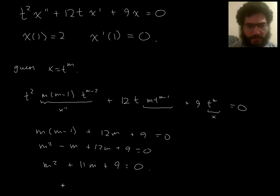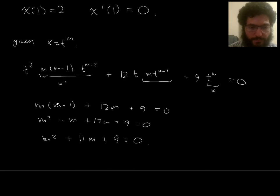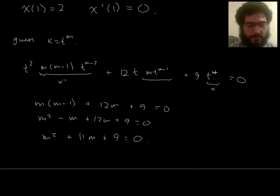So then, I guess, not seeing a nice way to factor it, so there's integer roots, so I'm just going to use the quadratic formula. So m is going to be negative 11, plus or minus the square root of 11 squared minus 4 times 9, all over 2.